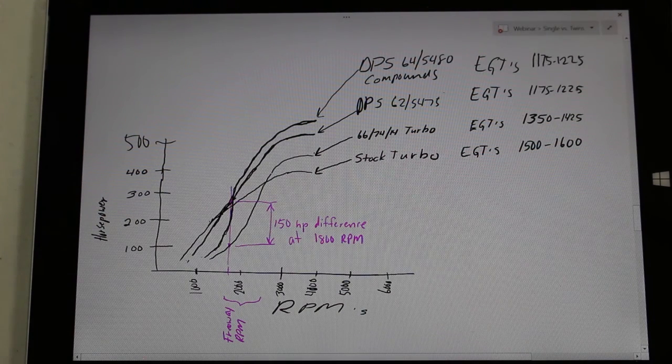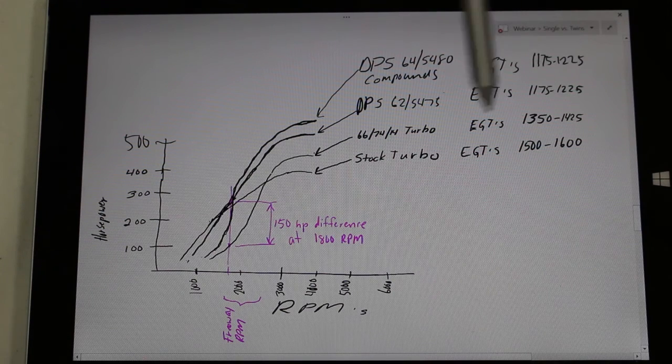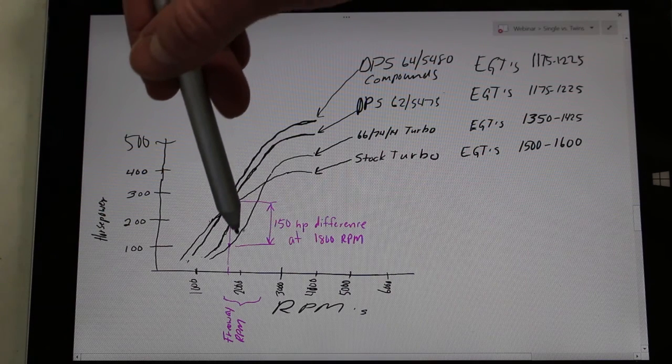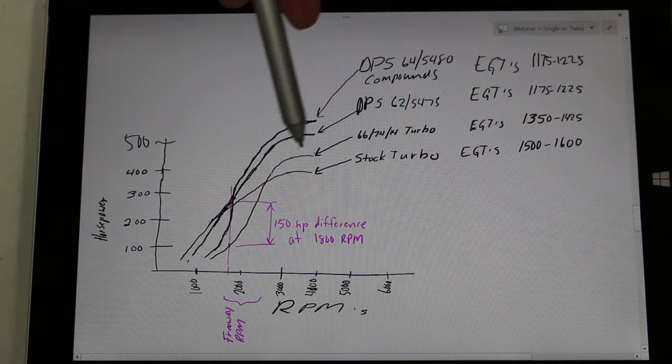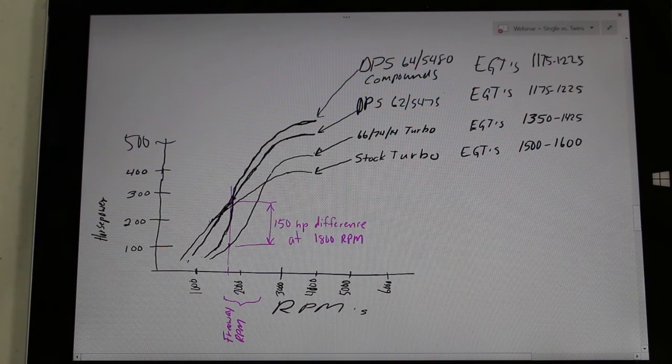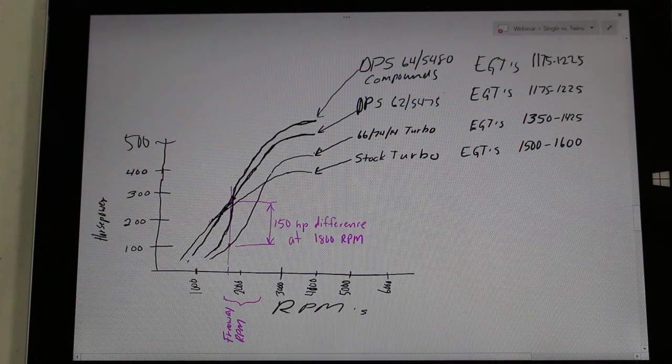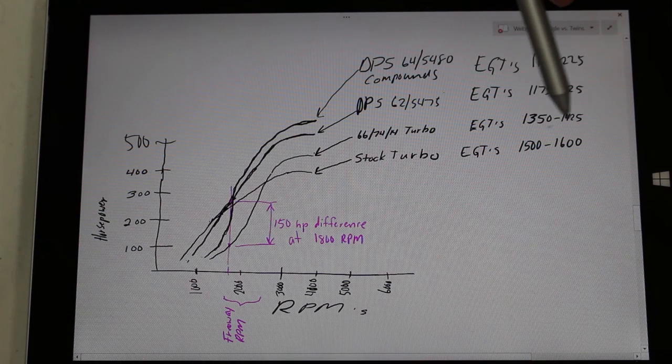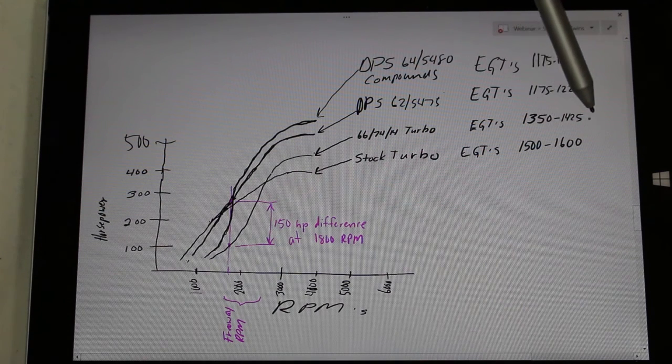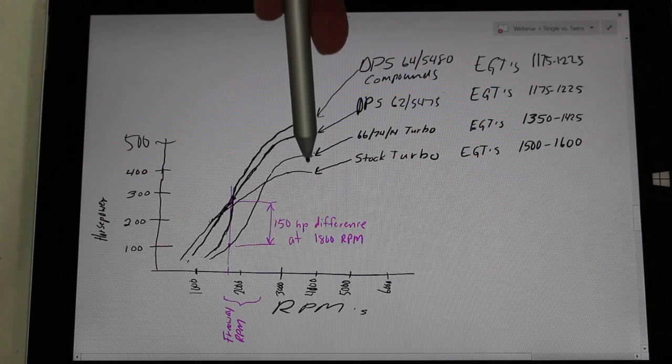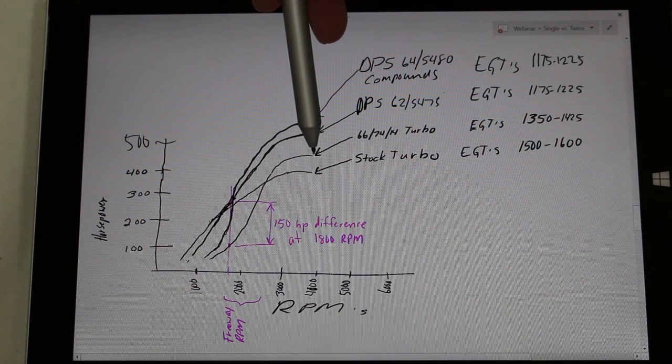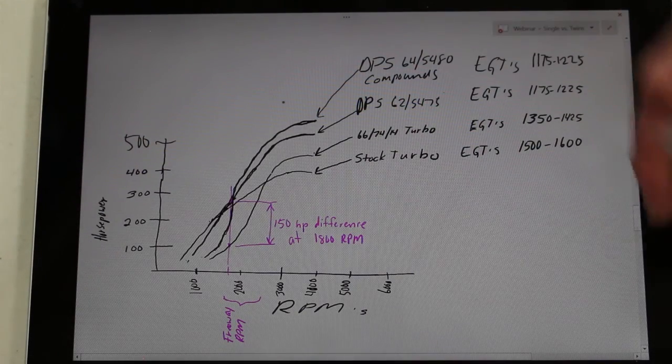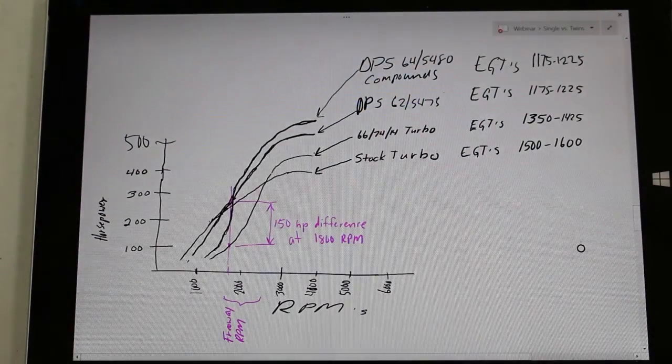Now if you compare that to a really big single turbo, like say that 66-74-14, and we don't even sell those turbos as a single because they spool so slow, but a lot of guys are running those and that's why we're comparing it here. So that big of a turbo will run cooler at higher RPMs by about like 150 to 200 degrees because it's so big and it does push a decent amount of air compared to the stock turbo, but nothing compared to our compound kit. But it's going to run really hot at low RPMs because it doesn't even spool up until about 1900 to 2000 RPMs.